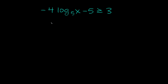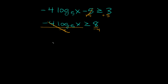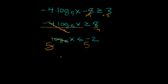Let's try one more — it's pretty similar, but the main difference is how we write our answer. Negative 4 times log base 5 of x minus 5 is greater than or equal to 3. First, get rid of the minus 5 by adding 5 to both sides: negative 4 log base 5 of x is greater than or equal to 8. Divide both sides by negative 4 — those cancel out — and since we divided by a negative number we flip the sign, giving log base 5 of x is less than or equal to negative 2. Write a big 5 on both sides, the 5 and log base 5 cancel out, so x is less than or equal to 5 to the negative second power, which is 1 over 25.